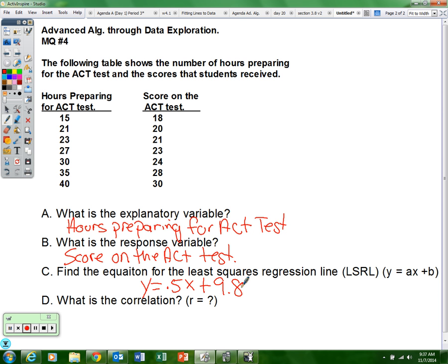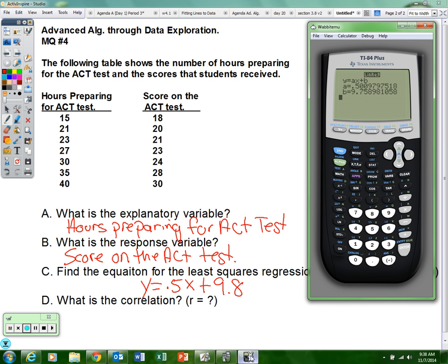The next question is, what is the correlation? Well, as you noticed on the calculator, the R is missing. If this ever happens to you, what we need to do is hit the yellow or the second button—ours is blue on this one—and then go to 0, which is the catalog.